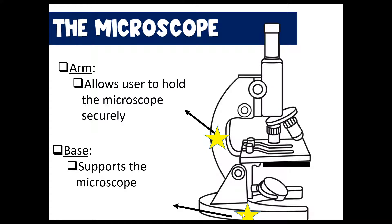The arm is a support system for the microscope and is how we hold and transport it. The rule is to always hold your microscope by the arm, which is on the side, and the base. Both the arm and the base are the supports for the microscope, and this is how we transport and carry it.